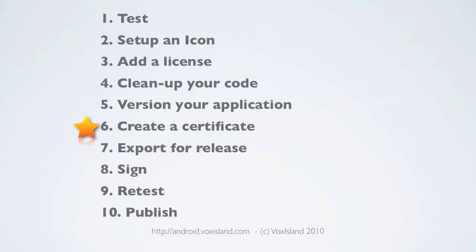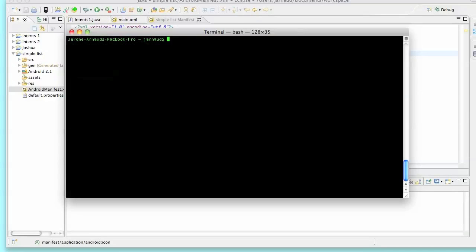This certificate is composed of two keys: one public and one private. Keep the private key private — do not share it at all. It's the key you'll use to sign your applications. The public key will be embedded in your application and checked at install time on the device, not at run time. Let's use a tool called keytool to create a certificate. I'll go into the android-app directory — right now it's empty.